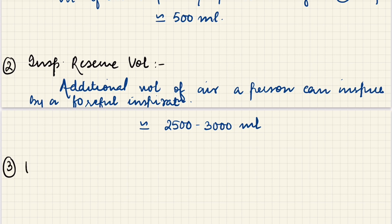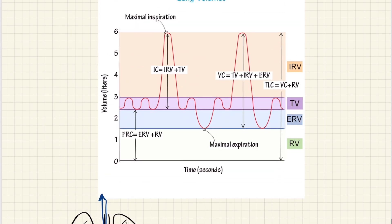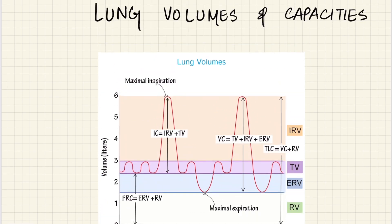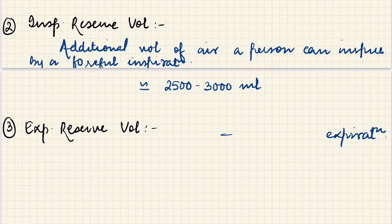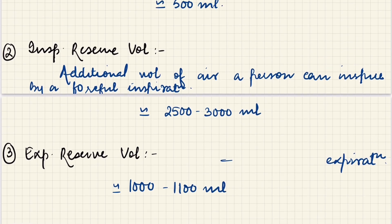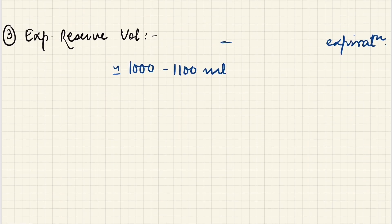The third volume is expiratory reserve volume. It is the same but opposite of inspiratory — it is the additional amount of air a person can expire by a forceful expiration. Normally we inspire 500 ml and then expire 500 ml, but with a forceful expiration this person can expire some more amount, and that amount is the expiratory reserve volume, which is equal to 1000 or 1100 ml. So tidal volume, inspiratory reserve volume, expiratory reserve volume — all very clear.